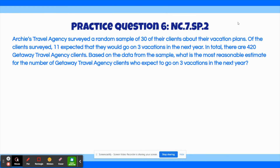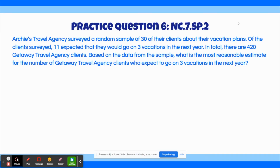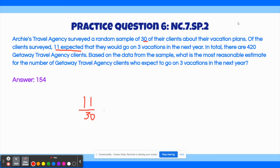Practice Question 6: Archie's travel agency surveyed a random sample of 30 of their clients about their vacation plans. Of the clients surveyed, 11 expected that they would go on 3 vacations in the next year. In total, there are 420 getaway travel agency clients. Based on the data from the sample, what is the most reasonable estimate for the number of getaway travel agency clients who expect to go on 3 vacations in the next year? The correct answer is 154 clients. We set up a proportion: 11 over 30 equals x over 420, because 420 is the total number of clients.